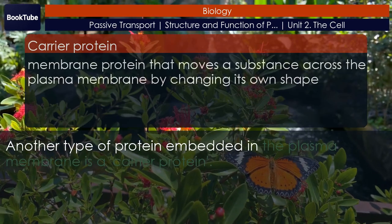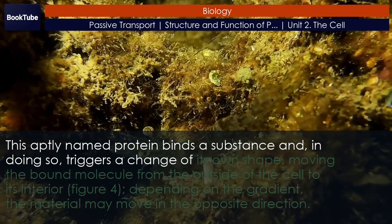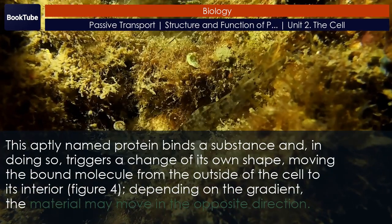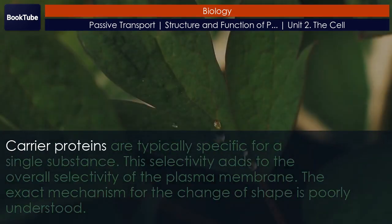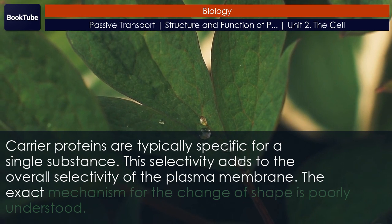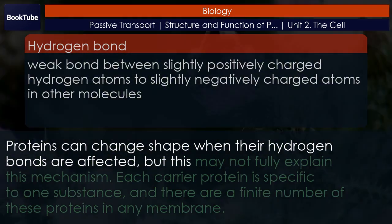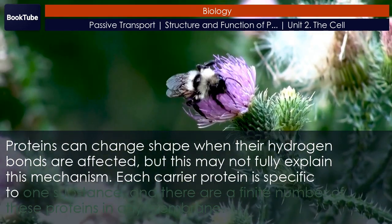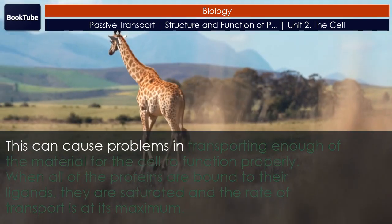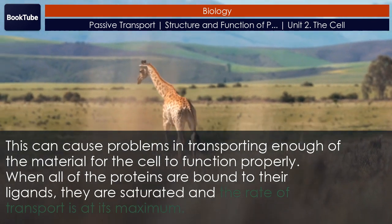Carrier proteins. Another type of protein embedded in the plasma membrane is a carrier protein. This aptly named protein binds a substance and, in doing so, triggers a change of its own shape, moving the bound molecule from the outside of the cell to its interior. Depending on the gradient, the material may move in the opposite direction. Carrier proteins are typically specific for a single substance, and this selectivity adds to the overall selectivity of the plasma membrane. The exact mechanism for the change of shape is poorly understood. Proteins can change shape when their hydrogen bonds are affected, but this may not fully explain this mechanism. Each carrier protein is specific to one substance, and there are a finite number of these proteins in any membrane. This can cause problems in transporting enough of the material for the cell to function properly. When all of the proteins are bound to their ligands, they are saturated and the rate of transport is at its maximum.